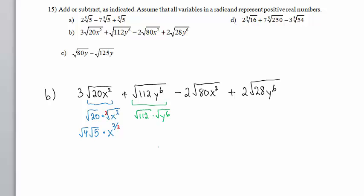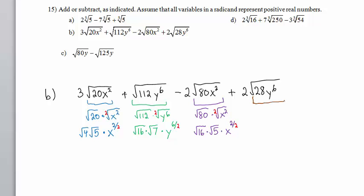The largest perfect square that divides into 112 is 16. So we have the square root of 16 times the square root of 7, because 16 times 7 is 112, times y raised to the 6th divided by the root number 2. For square root of 80 times the square root of x squared, the largest perfect square that divides into 80 is 16. We have square root of 16 times the square root of 5 times x raised to the 2 divided by the root number. Then square root of 4 times square root of 7 times y to the 6th divided by the root number.